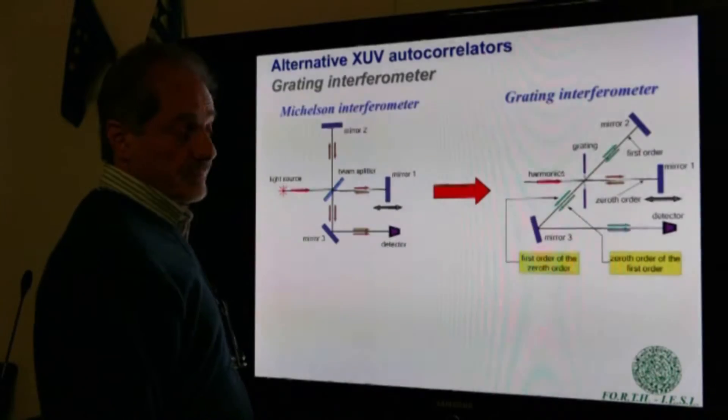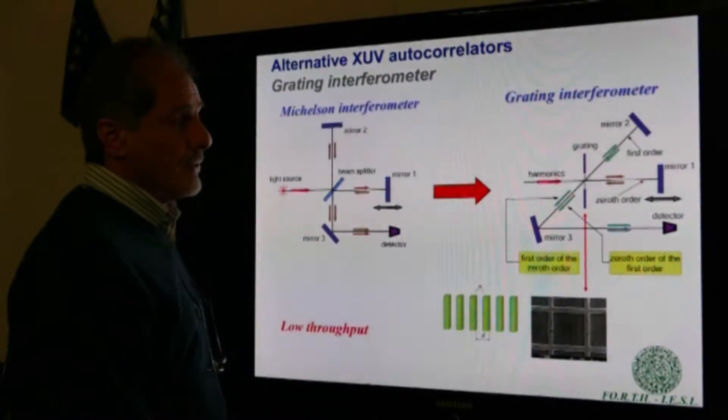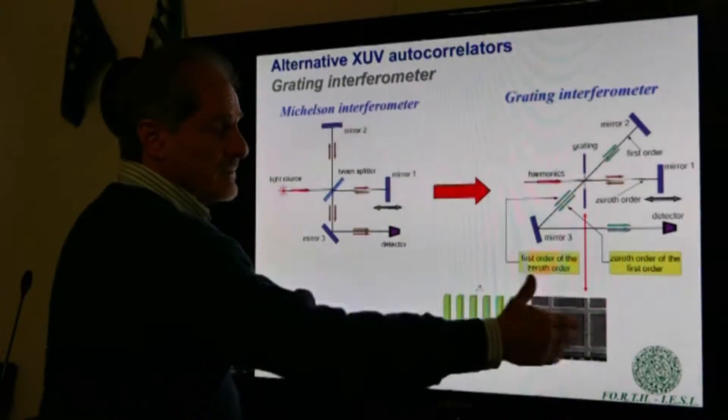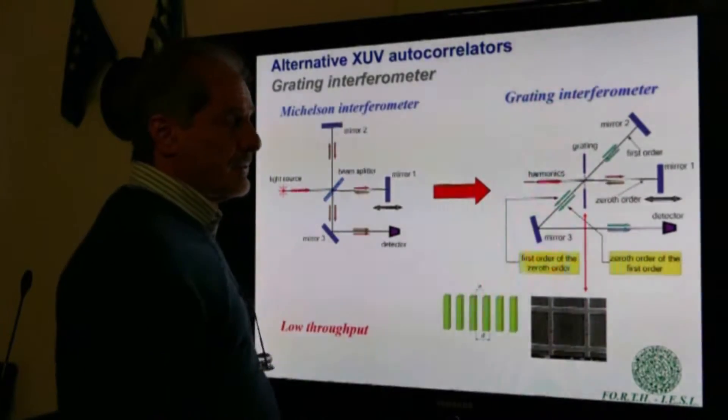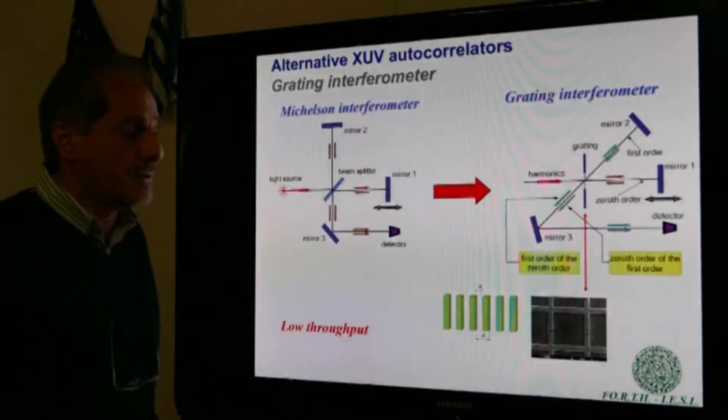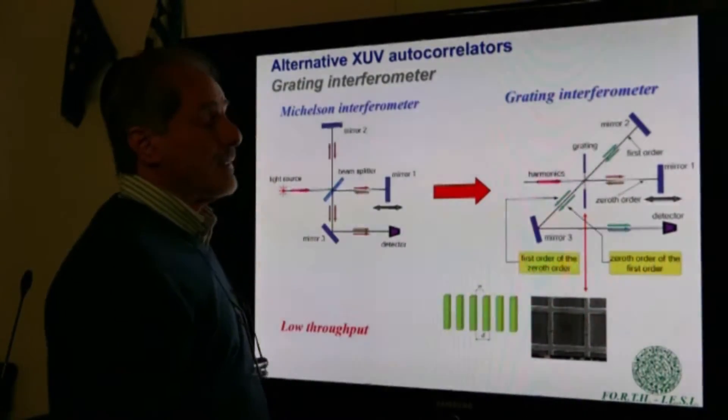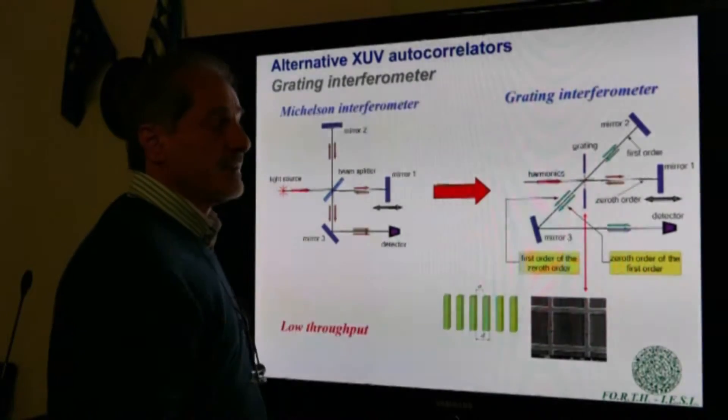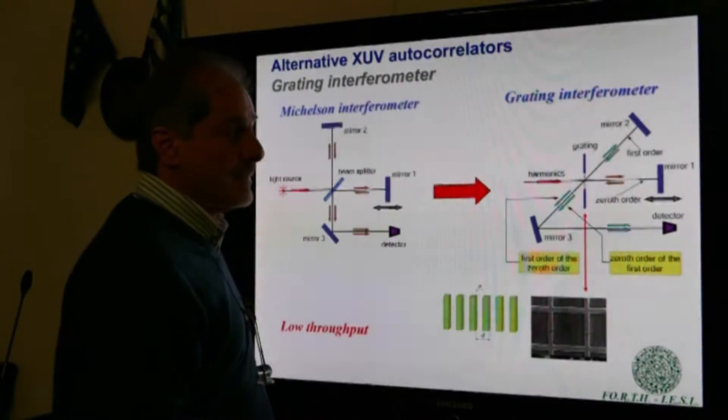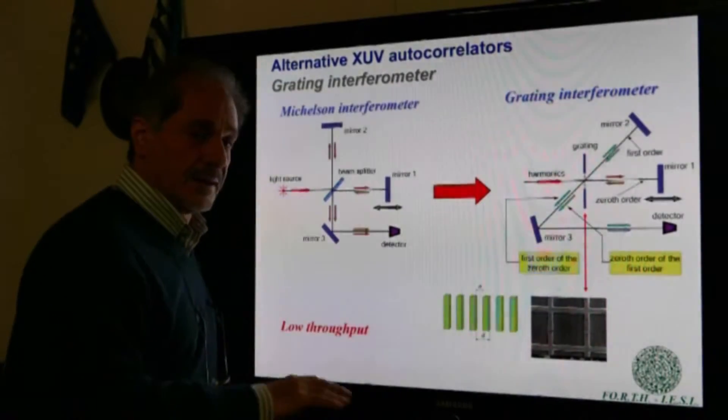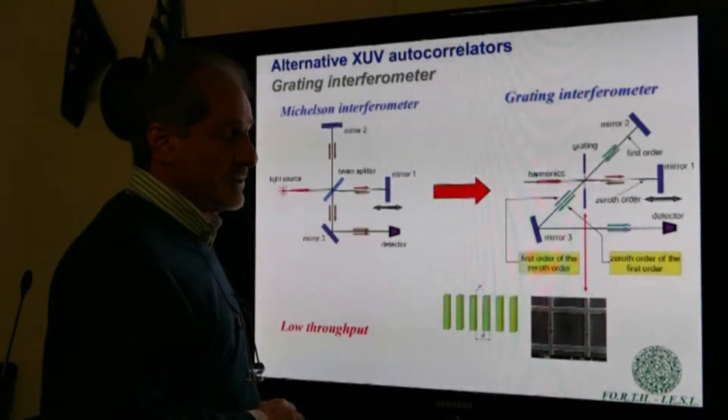As I said, in this figure we are showing a transmission grating, which can be produced, not easily, but can be produced, and has the advantage that the throughput is flat spectrally. It has a constant throughput, independently of the wavelength that is used.